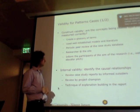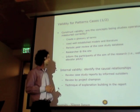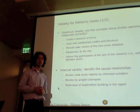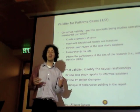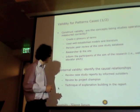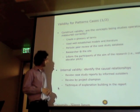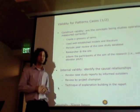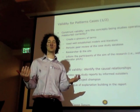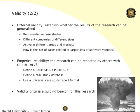In terms of internal validity, identify the causal relationships. You want to get reviews from informed outsiders — that could be me, that could be some of your colleagues. Review by the project champion — we talked about that. And perhaps use some explanation building in the report. For example: we think the variability of the product was enhanced by this particular pattern because A, B, C, D, and E.